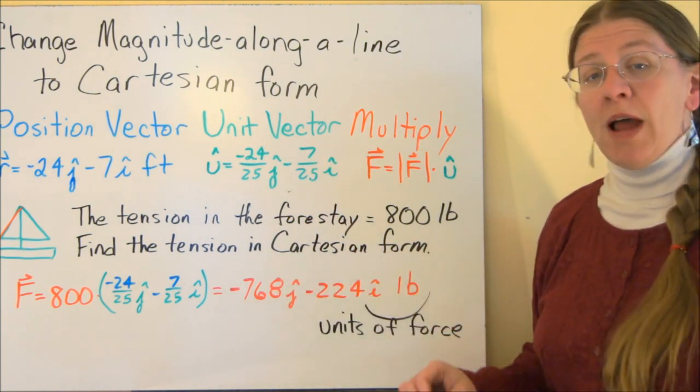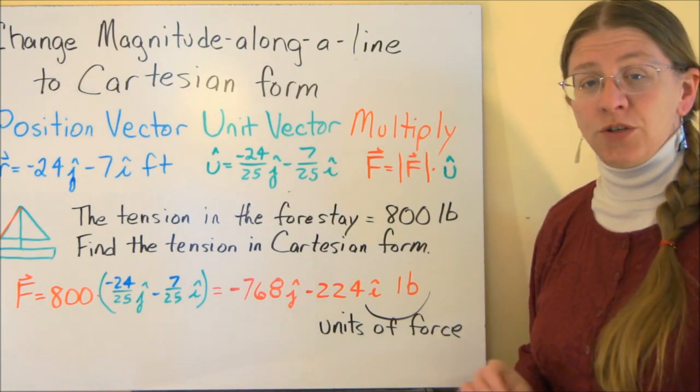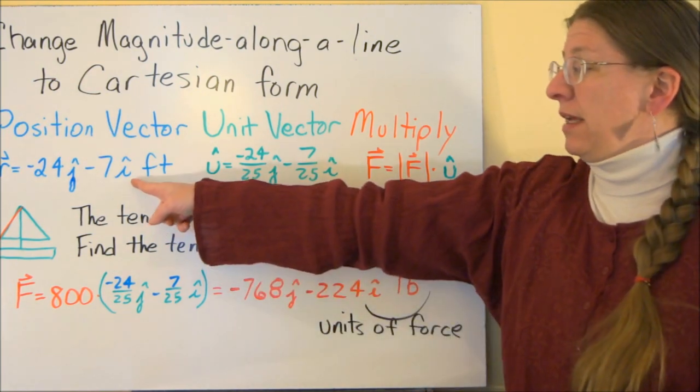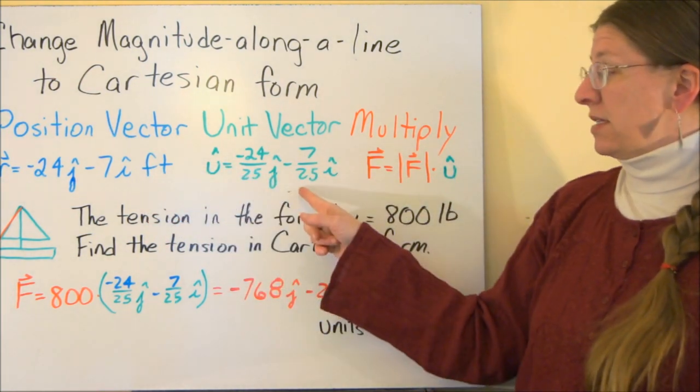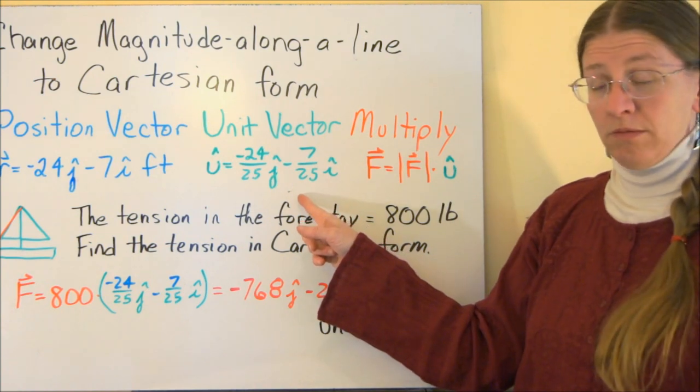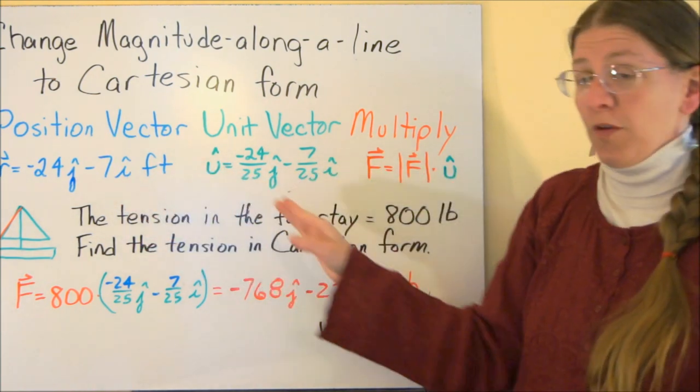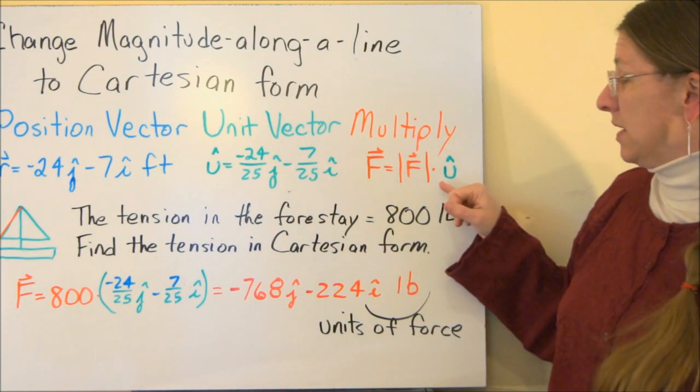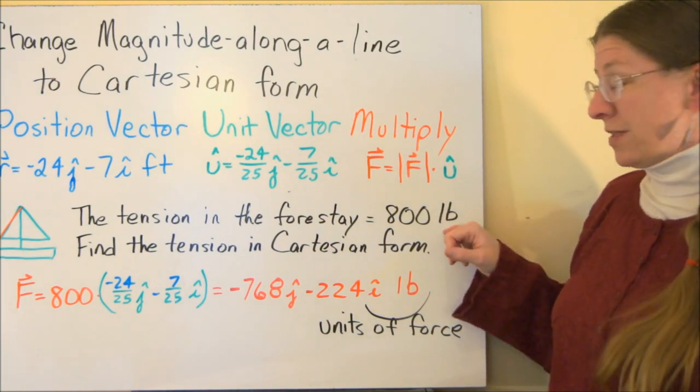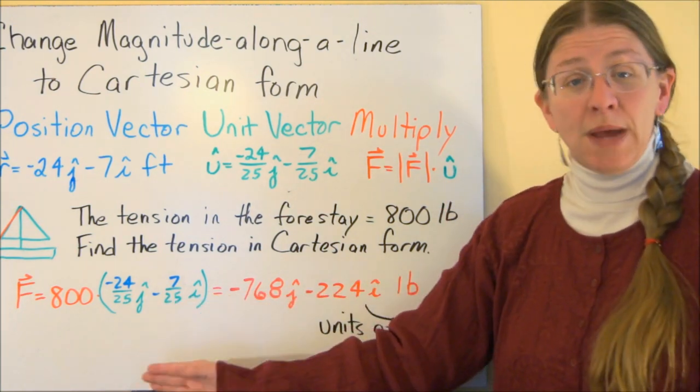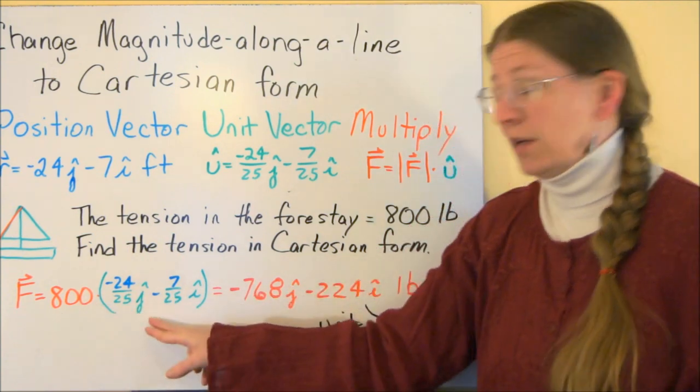So often what you will have to do is find that tension in Cartesian form. So this is where you're going. This is the pure direction. This is the position of the forestay. This is the pure direction of the forestay. And this is, multiply it by now its magnitude. So a force is a magnitude and direction. Here's the magnitude. Here's the direction.